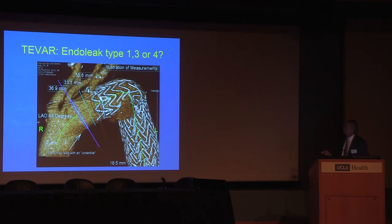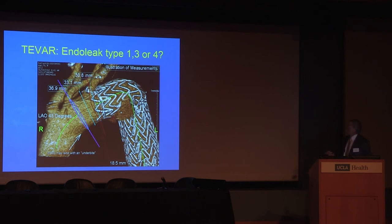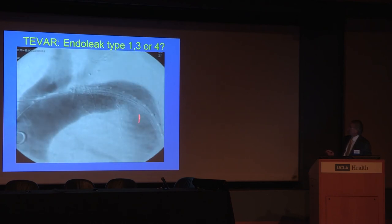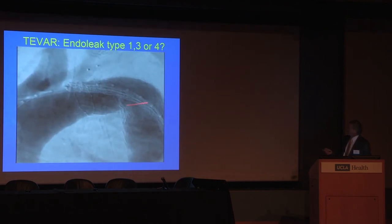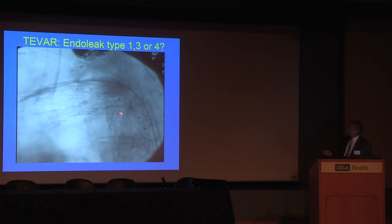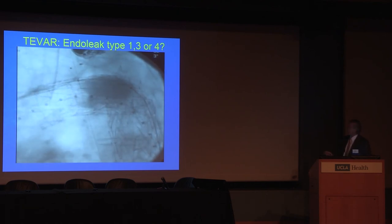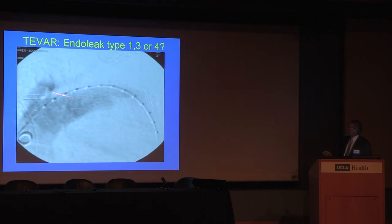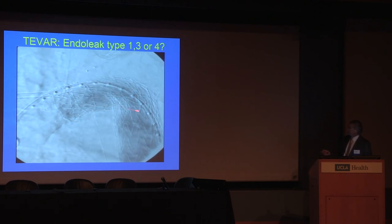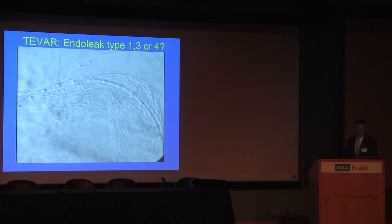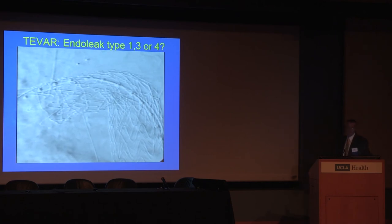Here's an endoleak that is difficult to characterize — a case where you learn from when things don't go as intended. This device should have been either below that curve or committed to the curve, but the distal device is pushing the more proximal device up, causing the endoleak. We were able to extend the device but could not get it to flare down. This is a misdeployment to be avoided: either commit around the curve or deploy distal to the inner curve of the aorta.